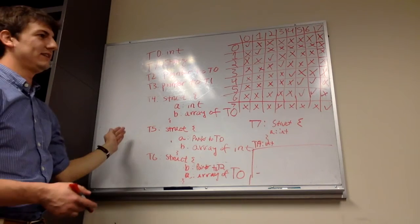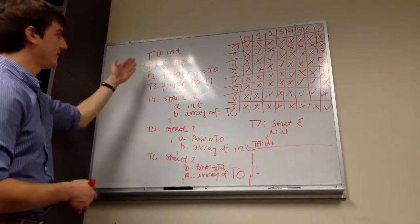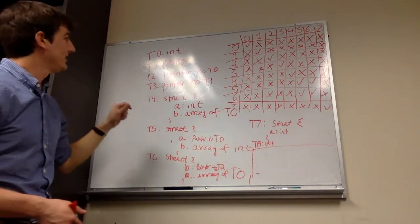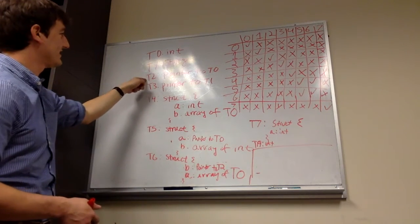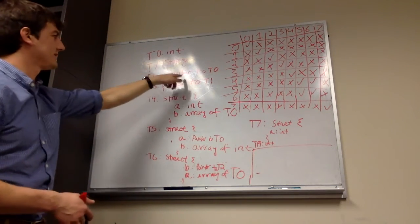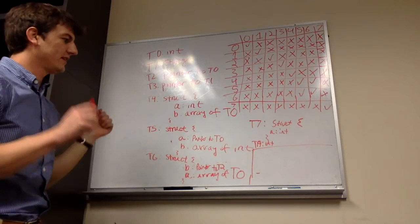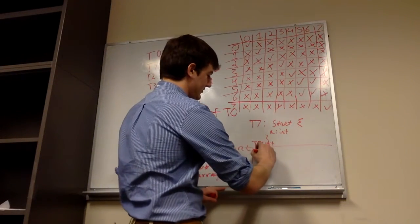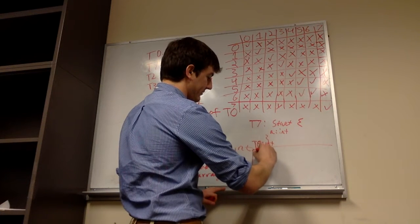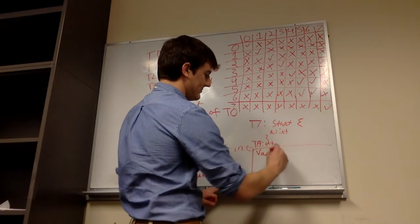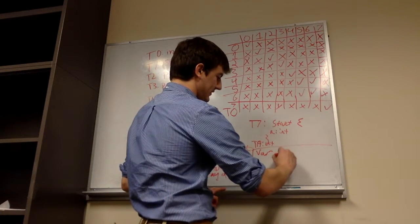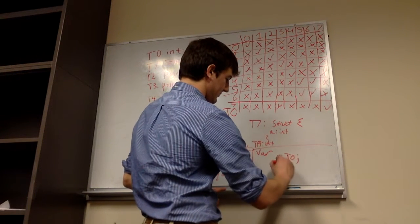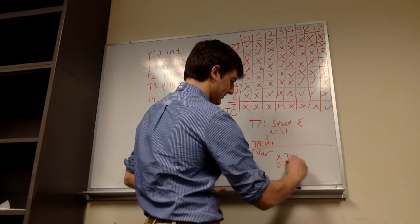Clearly they're all going to be not name equivalent, because they all have different names. So here we're defining a type T0 that is defined as an int. And here we're defining a type name T2 that's a pointer to a type T0. So type equivalence comes into when we talk about variables and what the types of variables are. So if we declare variable X that is type T0, and then we declare variable Y that's type T0.